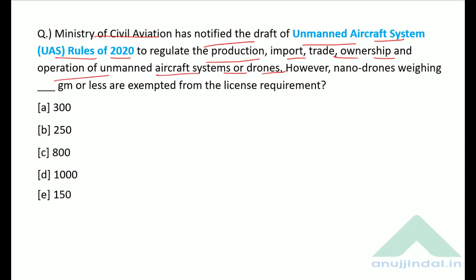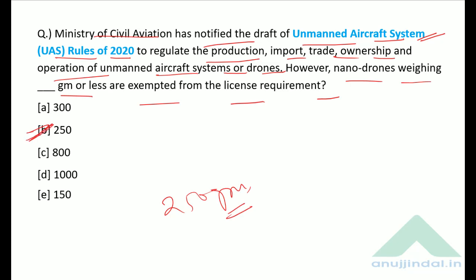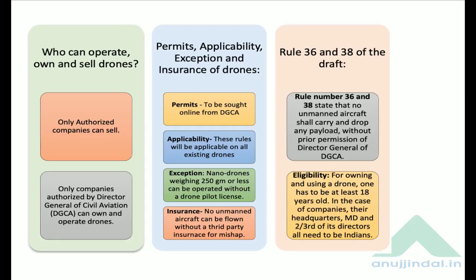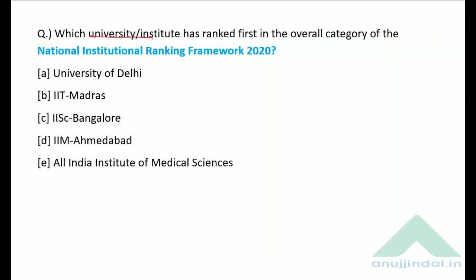Under the UAS Rules 2020, all drones will be regulated. However, nano drones weighing 250 grams or less are exempted from the license requirement. The correct answer is option B — 250 grams.